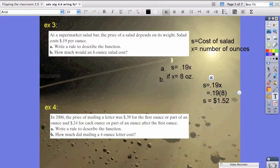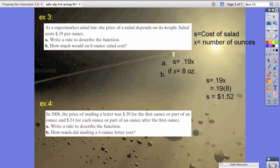So we've solved A and B. Question number 2, or example 4, says the price of mailing a letter was 39 cents for the first ounce or part of an ounce. And 24 cents for each ounce or part of an ounce after the first. So A says write a rule and then determine the cost of mailing a 4 ounce letter.